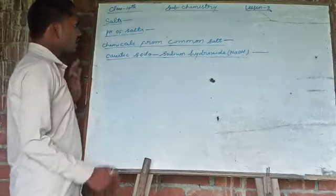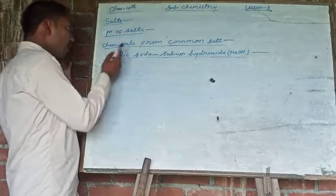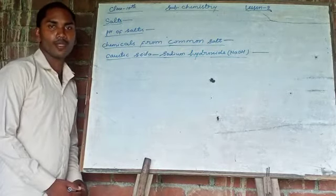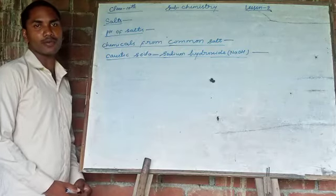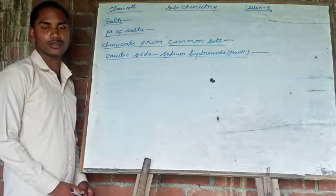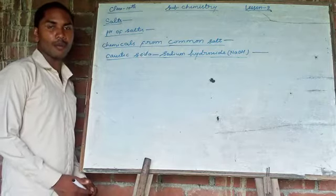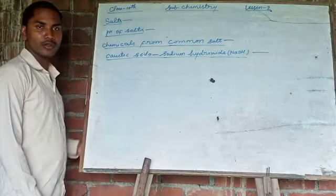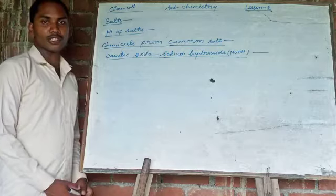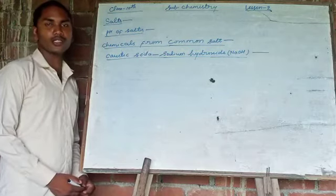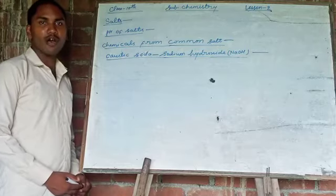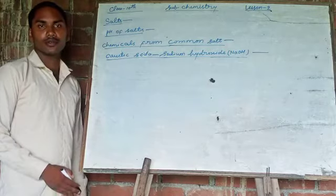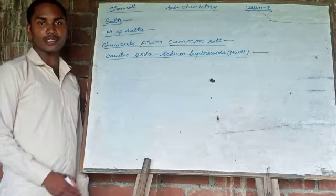After that, we will discuss chemicals from common salt. As we know, sea water has many salts dissolved in it. In many parts of the world, some solid layers of salts are also formed. The salt which is formed from sea is brown due to the presence of impurities. These salts are used as a raw material for many chemicals.